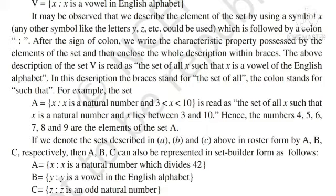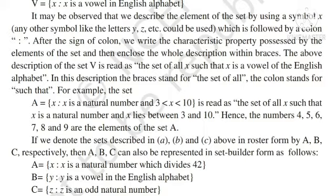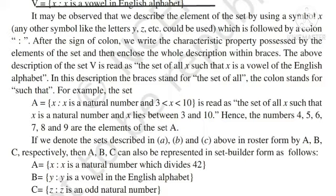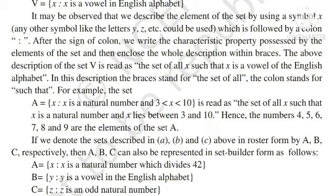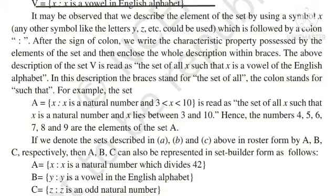It may be observed that we describe the elements of the set by using a symbol x — you can also use y instead। यह x के बाद एक colon देना पड़ेगा। Colon को पढ़ेंगे 'such that'। Then we write the characteristic property possessed by the elements of the set। So: x such that x is a vowel in English alphabet। Then enclose the whole description within curly brackets। The set of all — and the colon is read as 'such that'।